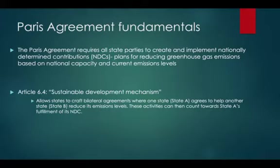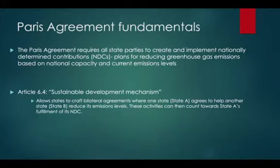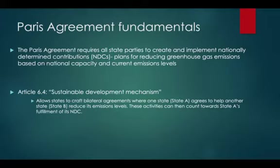Contrary to some of Trump's rhetoric, the Paris Agreement does not entail the United Nations forcing the U.S. to cut jobs in the coal sector or implement any specific UN-mandated policies. The only specific action that the U.S. and all other countries had to comply with under the Paris Agreement was reporting their annual greenhouse gas emissions to the UN. But the U.S., like every other party to the agreement, got to write its own plan for reducing emissions and was ultimately free to decide what domestic policies it would implement to achieve the goals laid out in that plan. Still, even though the Paris Agreement allowed states wide discretion in policy implementation, Trump pulled out of it.